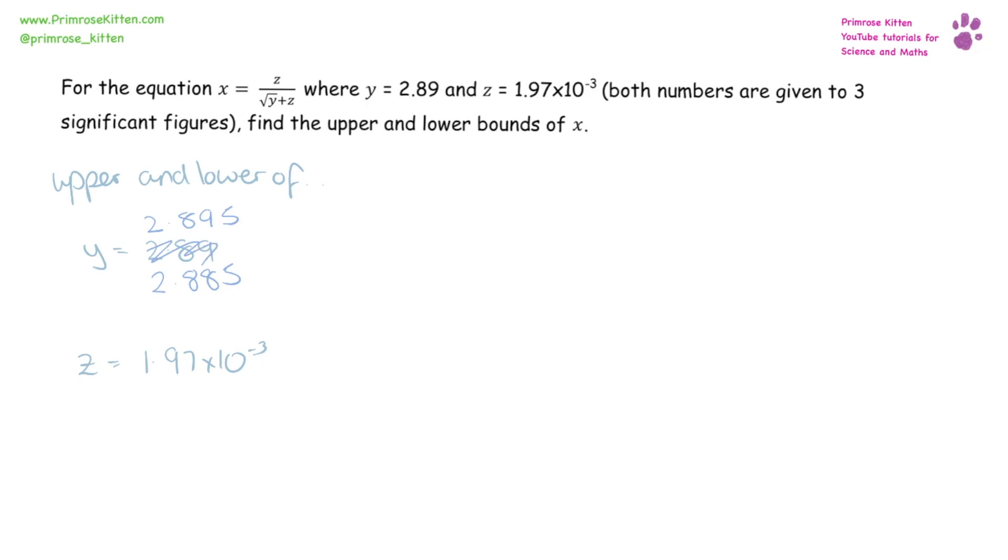We're going to do the same for z, where we have 0.0011965 as our lower and 0.001975 as our upper.